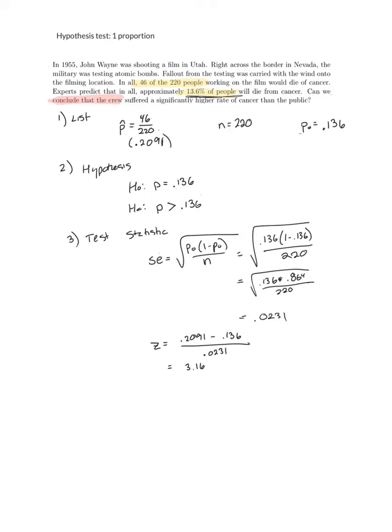For our first full example here, I went ahead and pulled an example we've been working throughout the steps. This is one that talks about atom bomb testing in Utah in 1955 and what happened afterwards.